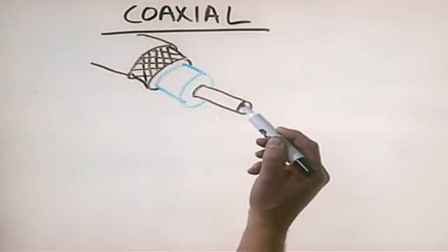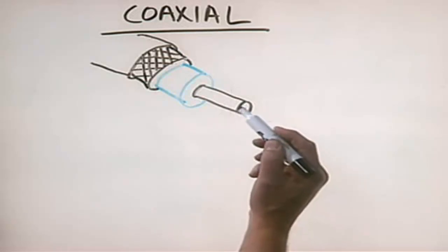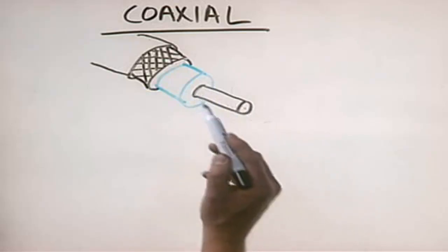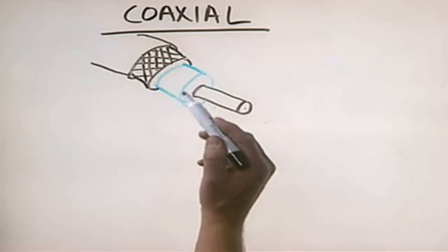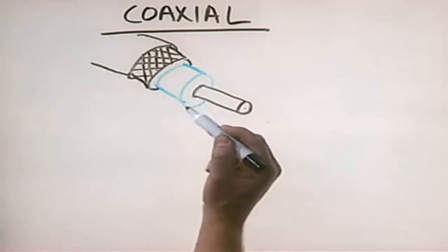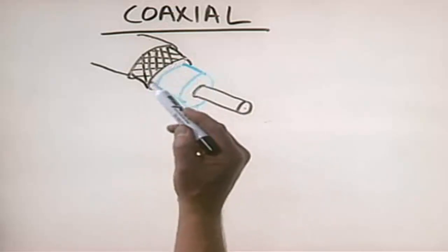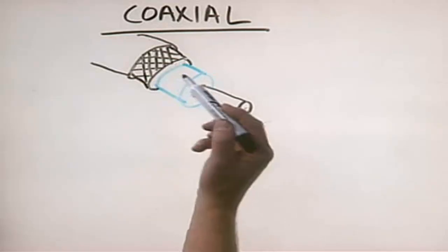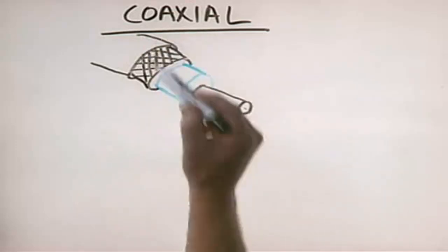The first is the central conductor right here. This is usually a piece of solid copper wiring, and this wire carries networking signals. Surrounding this central conductor is an insulating sheath, usually made out of plastic PVC. Then surrounding this plastic sheath is a second conductor. Notice that the center of the second conductor is the same as the center of this inner conductor, hence the term coaxial.